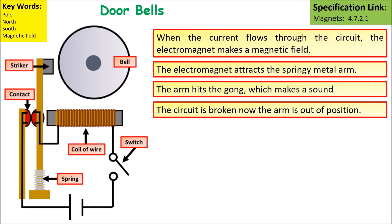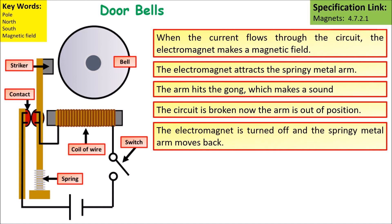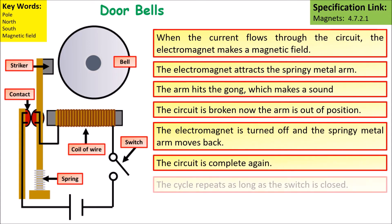The circuit is then broken because the arm is out of position, so the contacts are no longer in contact. The electromagnet is turned off and the springy metal arm moves back to its original position. This completes the circuit again and the entire cycle repeats until the switch is opened.